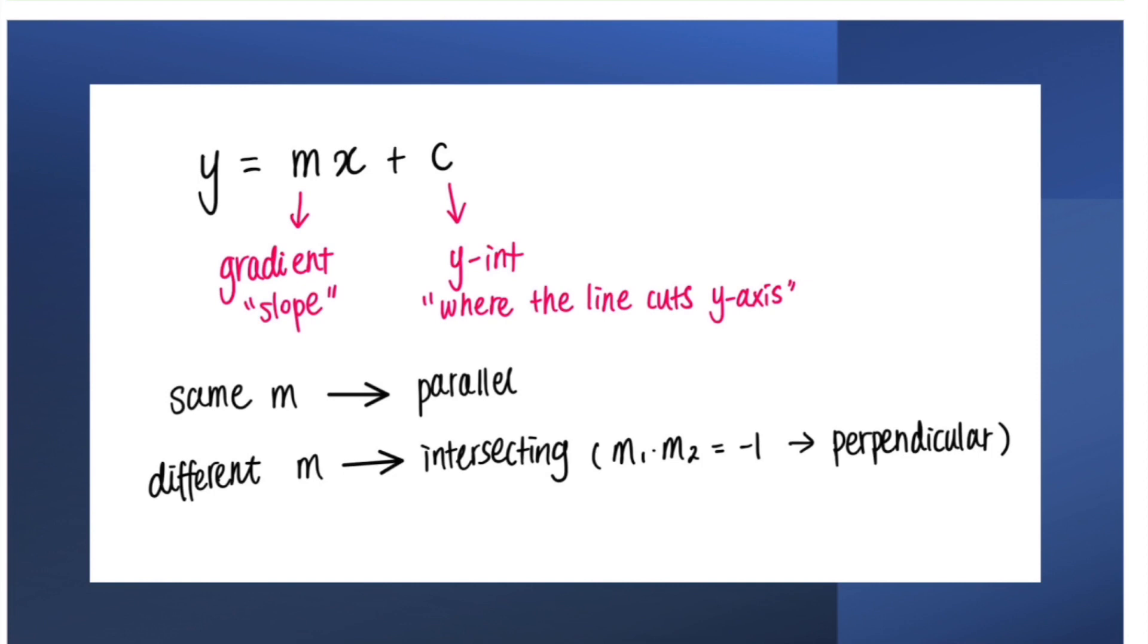When c is the same, the two lines are basically the same line. Here, c can be different, but as long as the gradient is the same, the two lines will have the same slope and are therefore called parallel lines.